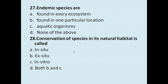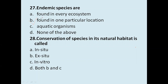Endemic species are: found in every ecosystem, found in one particular location, aquatic organisms, or none of the above. The answer is found in one particular location — endemic species are restricted to a specific location.